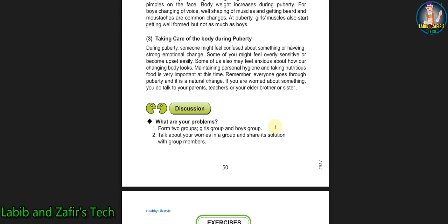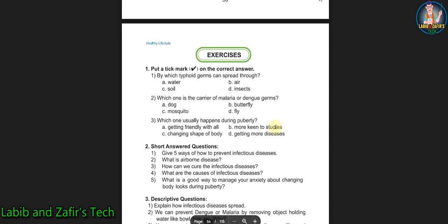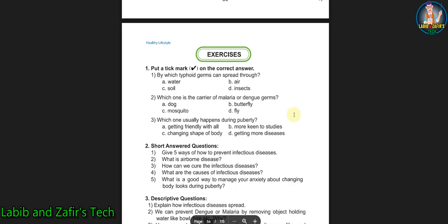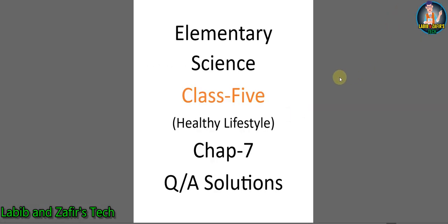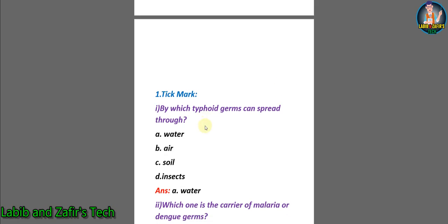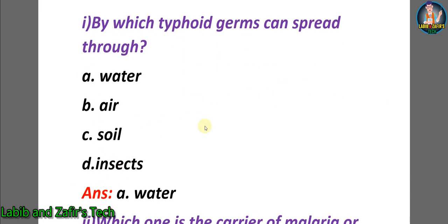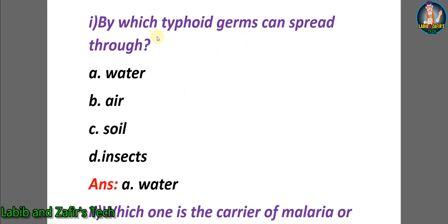Now let's go through the exercises part of this chapter — Elementary Science Class 5, Healthy Lifestyle, Chapter 7 question answers. First, tick mark question one: by which typhoid germs can spread? A) water, B) air, C) soil, D) insects. The answer is A) water.